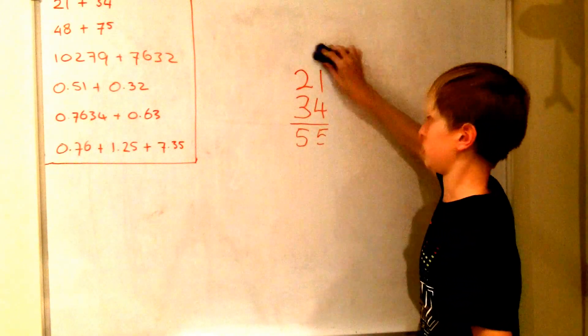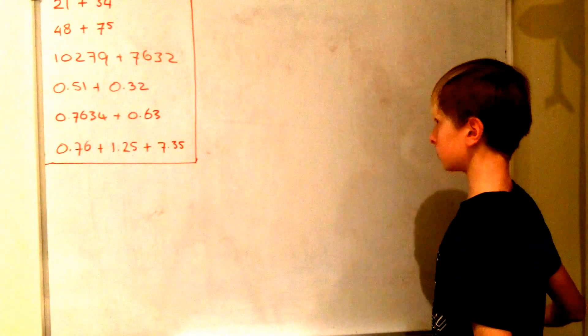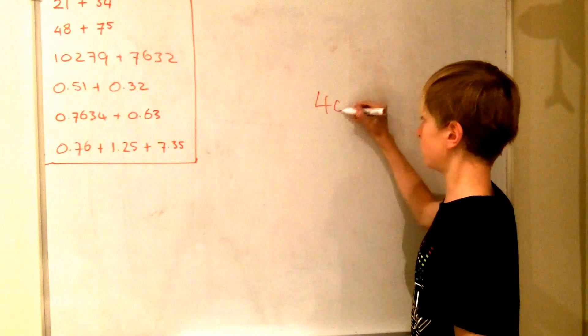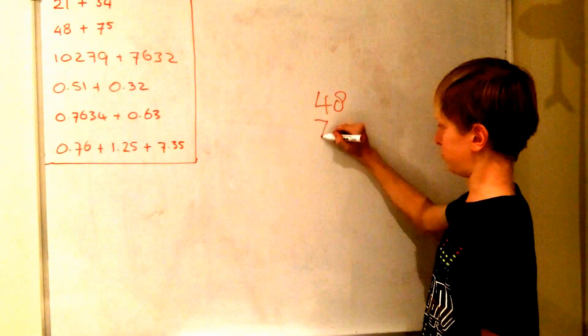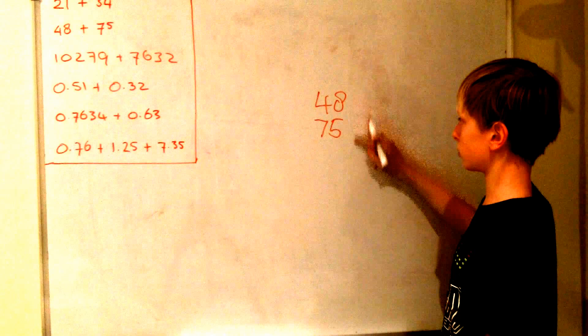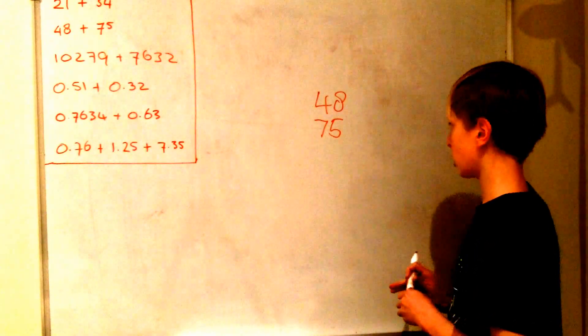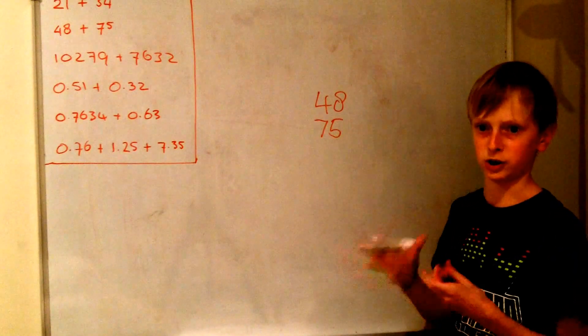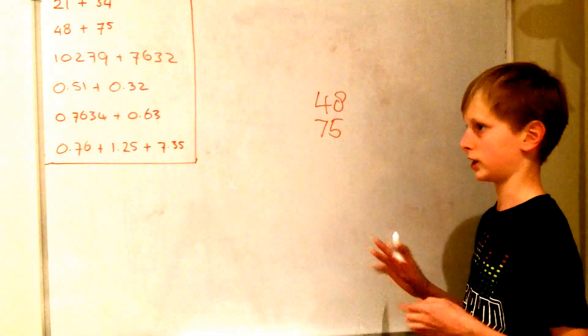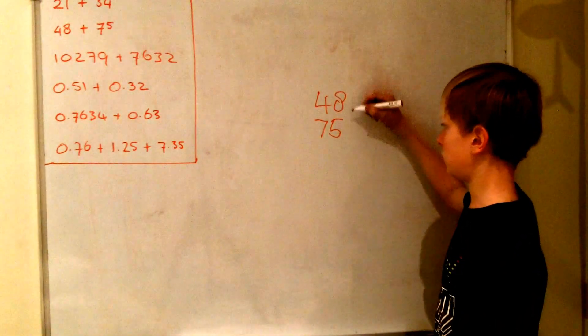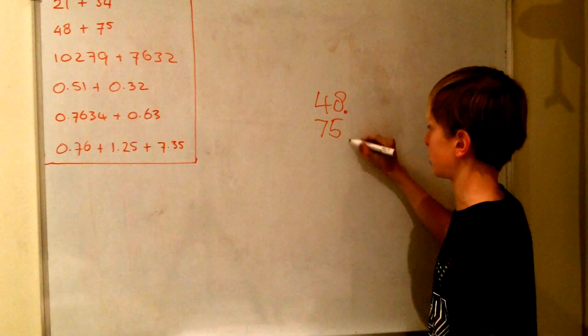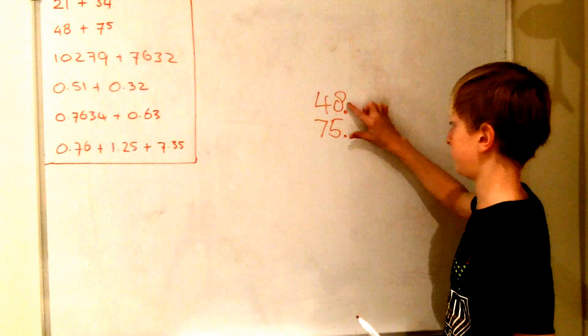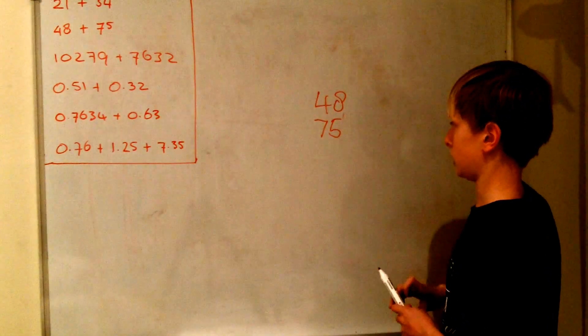So now I'm going to go to the next one. So now we have 48 plus 75. So now you've got to remember that the last two digits have to be in line. Because otherwise you're going to get a different number and it's going to get a different result. So you can actually imagine a decimal point here. So the decimal point has to be in line. But we can just leave this one out in here.